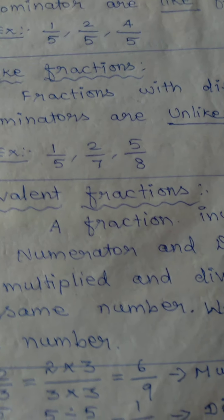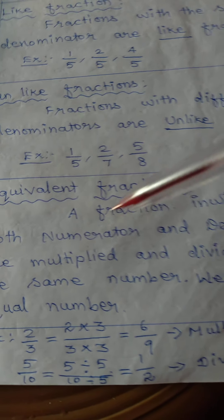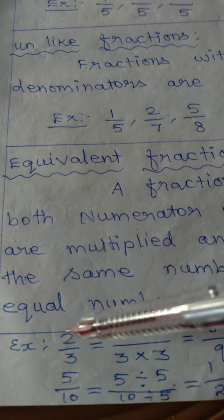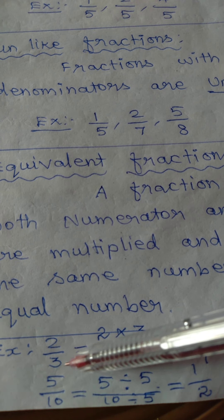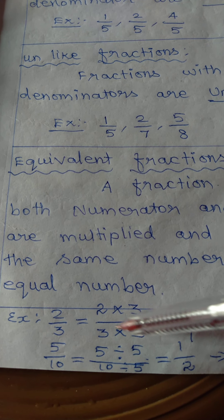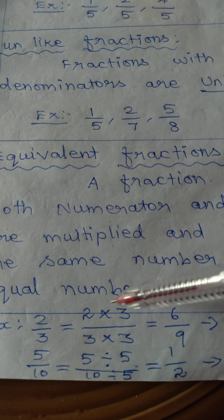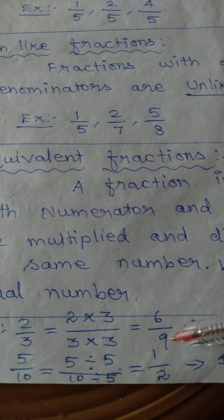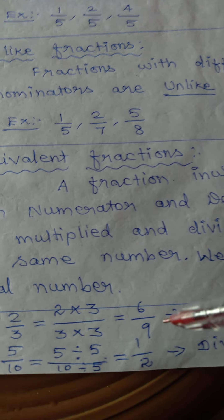Next, equivalent fractions. An equivalent fraction is a fraction in which both the numerator and denominator are multiplied or divided by the same number to get an equal fraction. For example, take 2 by 3 — multiply both numerator and denominator by 3: 2 into 3 by 3 into 3 gives 6 by 9. This is an equivalent fraction by multiplication.